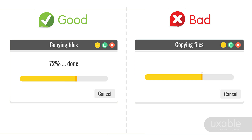Let's understand visibility of system status with some good and bad examples. When a user is copying files, the status should clearly show how much percentage has been copied or how much is remaining. On the left-hand side example, it shows 72% done — the status is very clear. On the right-hand side, there is a progress bar, but as a user you cannot tell how much has been completed or how much is left.